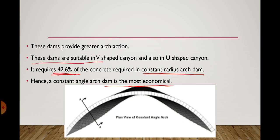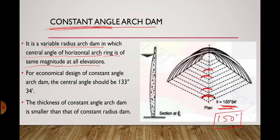If we compare the concrete consumed in a constant angle arch dam with a constant radius arch dam, the constant angle arch dam requires only 42.6% of the concrete. Hence, a constant angle arch dam is the most economical arch dam. These dams are suitable in both V-shaped and U-shaped canyons and provide greater arch sections.